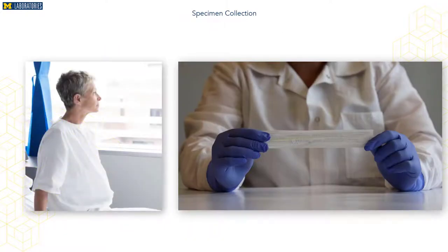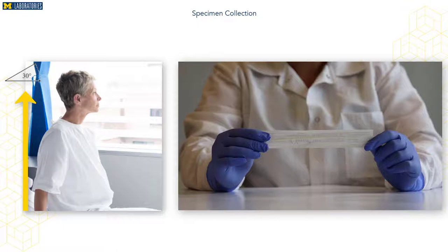After donning the appropriate PPE and explaining the collection procedure, have the patient blow their nose to clear any secretions, because secretions could make it difficult to collect the epithelial cells. Begin by positioning the patient for comfort and to facilitate safe specimen collection. The patient can be placed into a sitting position or can lay down with the head tilted at about 30 degrees to open the airway. Check the patient's nasal pathway to ensure there are no obstructions, such as a deviated septum.